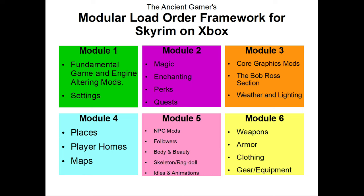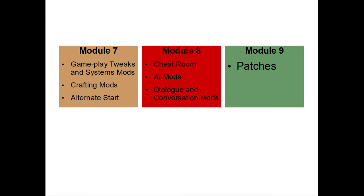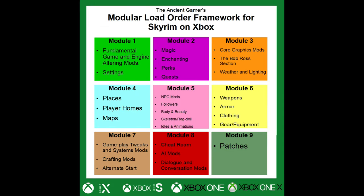The way the Modular Load Order Framework works is that mods in each section may overwrite parts of each other, but mods from section five are unlikely to overwrite mods from the modules above or below it. This makes life a lot easier, as it's much more manageable to work on a set of six to ten mods than it is to keep track of 50 to 70 all at once. Each module is like its own little tiny load order.